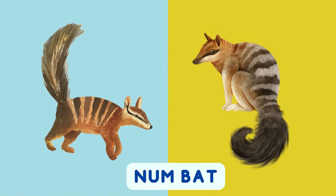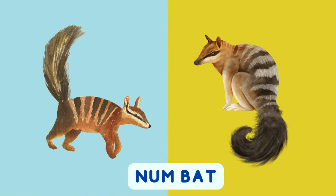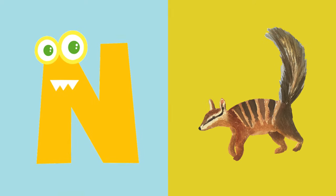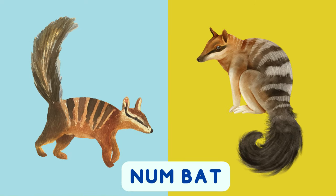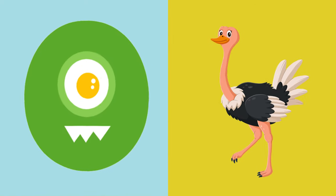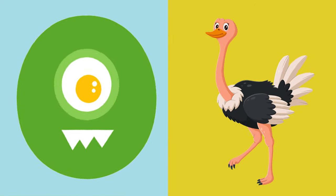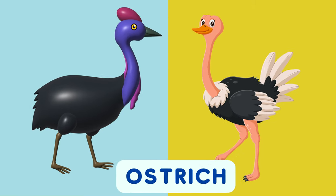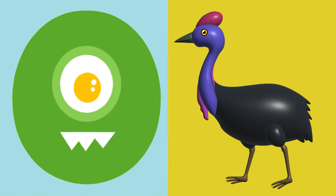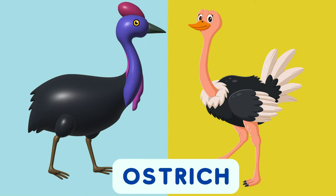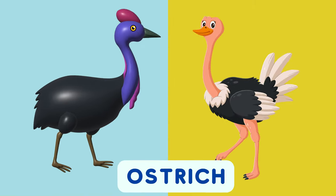N is for Numbat. N, N, N. O is for Ostrich. O, O, O.